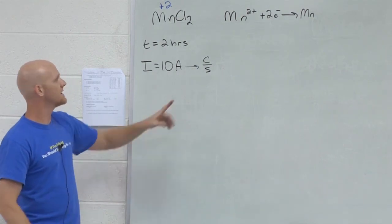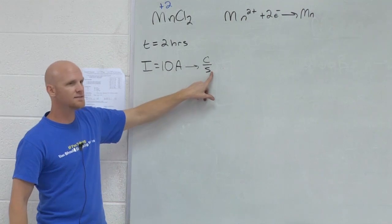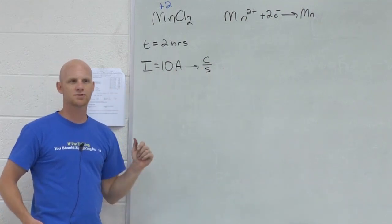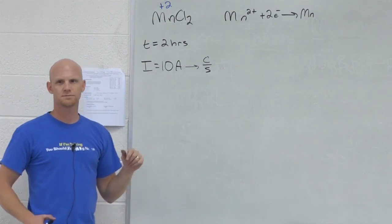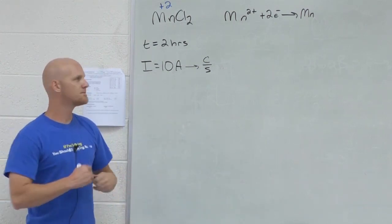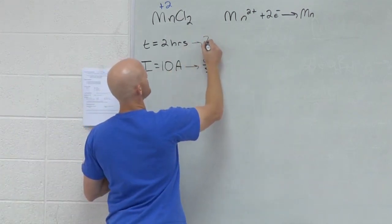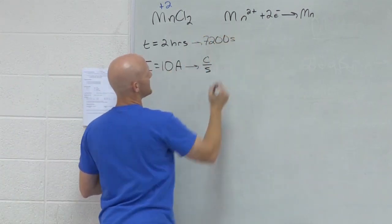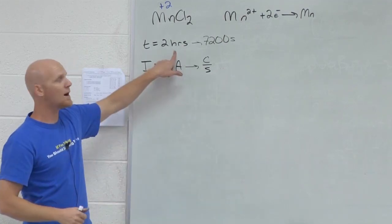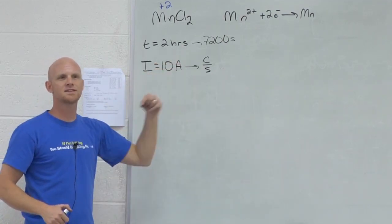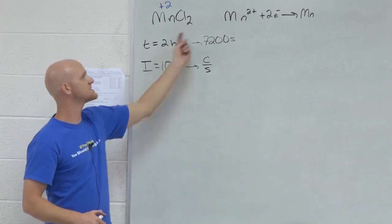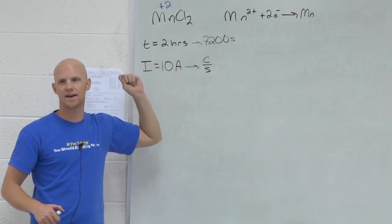If in every second we have 10 coulombs passing through the wire, well then how many would pass through in two seconds? 20. In five seconds? 50. In 7,200 seconds? 72,000. Notice two hours, every hour has 60 times 60, 3,600 seconds. So two hours has 7,200 seconds.